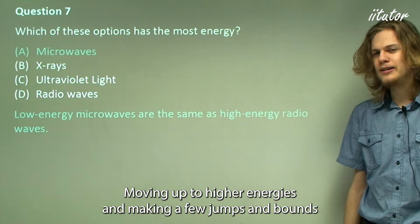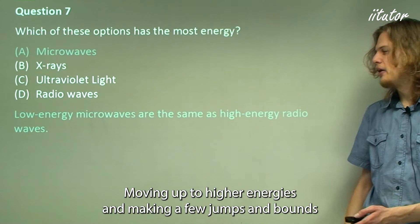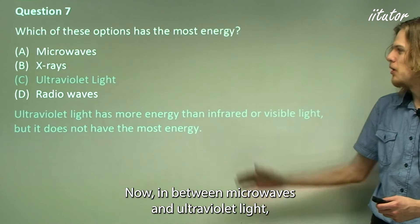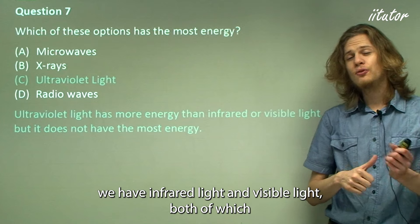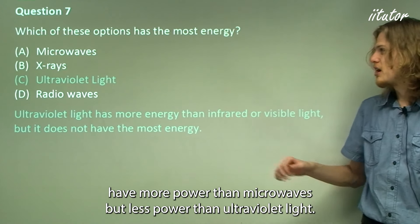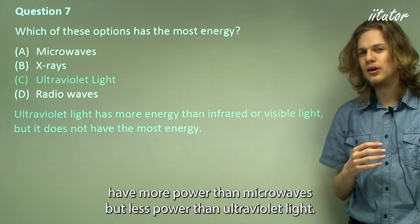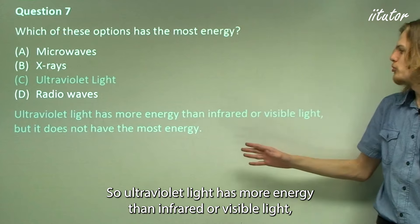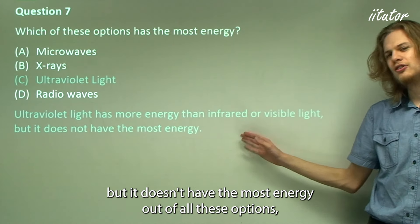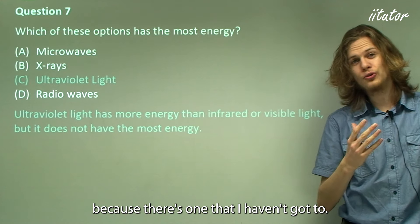Moving up to higher energies, we reach ultraviolet light. In between microwaves and ultraviolet, we have infrared and visible light, both of which have more power than microwaves but less than ultraviolet. So ultraviolet has more energy than infrared or visible light, but it doesn't have the most energy of all the options.